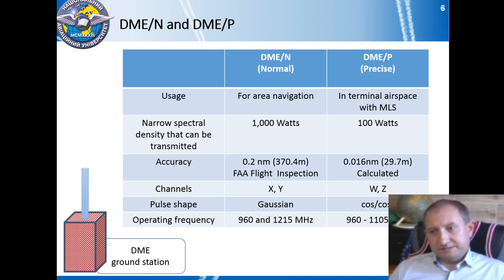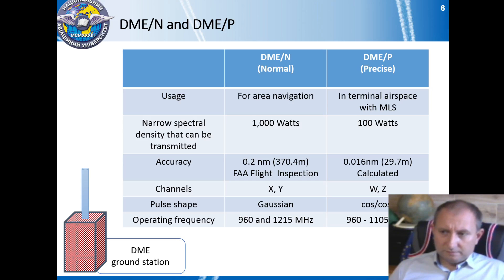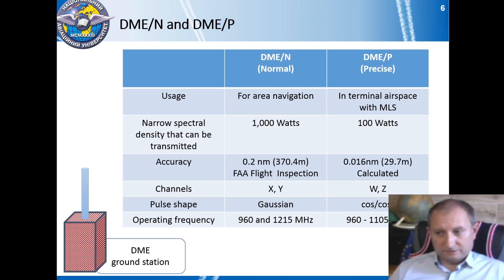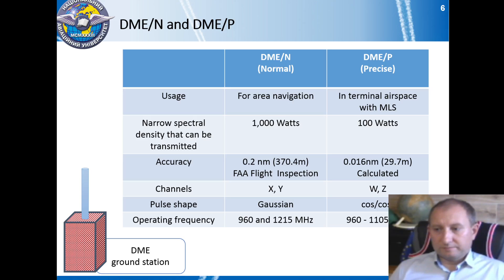There are two basic types of distance measuring equipment: normal and precise. Normal DME is used in air navigation applications, while precise DME is part of the microwave landing system. The main difference between them is the form of the pulse pair signal — normal uses a Gaussian envelope, while precise uses a cosinusoidal envelope. As a result, the accuracy of DME-P is higher than DME-N, but its maximum range is limited to the terminal area only, which is why DME-P is used only with the microwave landing system to guarantee precise aircraft landing.